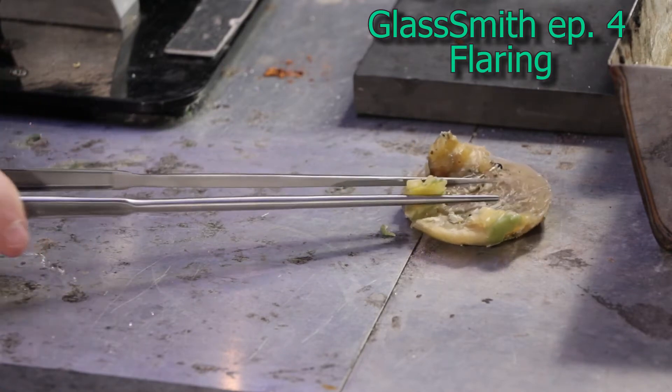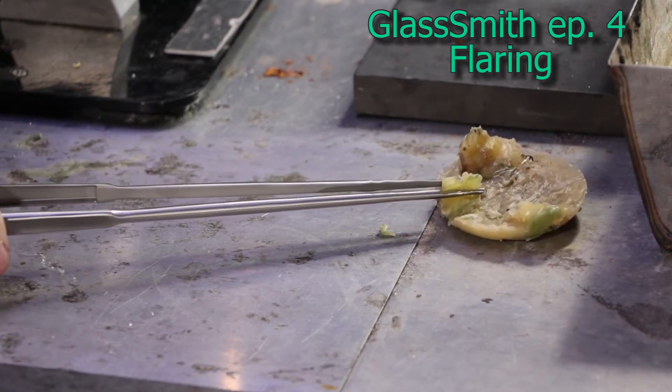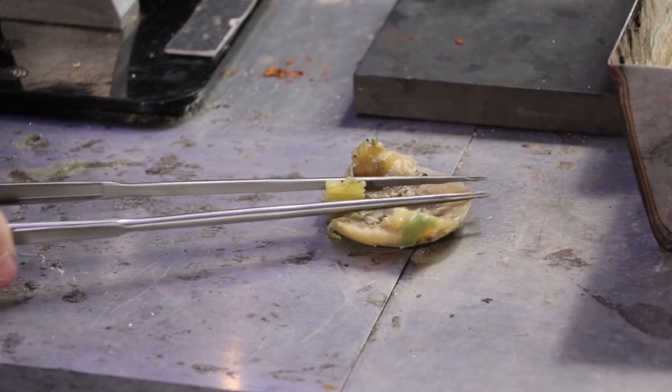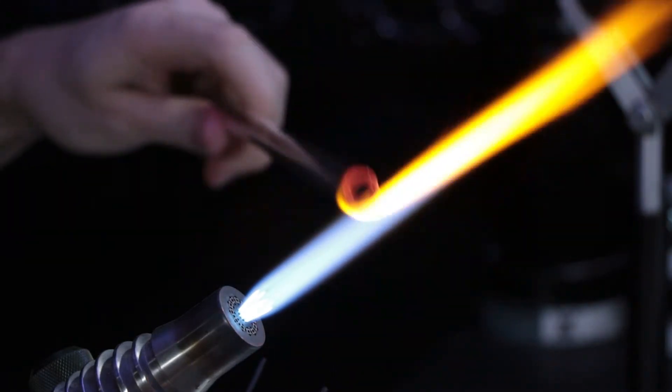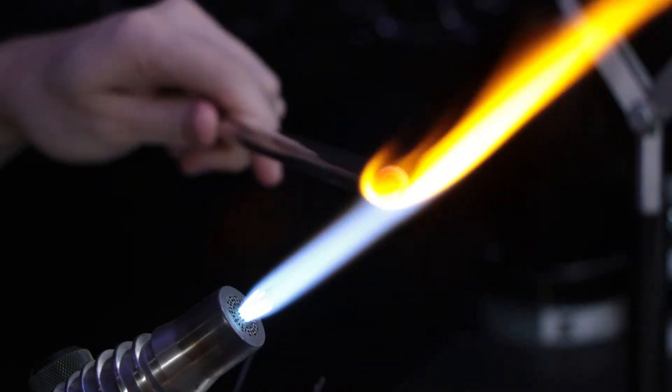I'm coating the tools in some natural beeswax, and as the beeswax makes contact with that hot glass it'll create a layer of vapor or steam that will protect the tool and allow it to kind of skate over the glass.